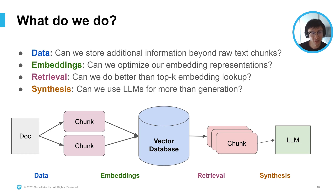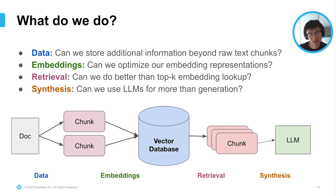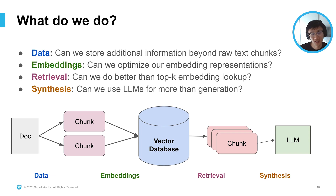Building a RAG pipeline involves a combinatorial explosion of different parameters and settings you can configure, and only some of that relates to the actual prompts for the LLM. Going back to the data: can we store additional information in text chunks beyond raw text? Can we have a better parsing or chunking strategy? For embeddings, can we optimize representations to better capture the specific data you have? For the retrieval strategy, can we do better than top-K embedding lookup? And for synthesis, can we use LLMs for more than just generation? We're building an entire stochastic system with a lot of moving parts.